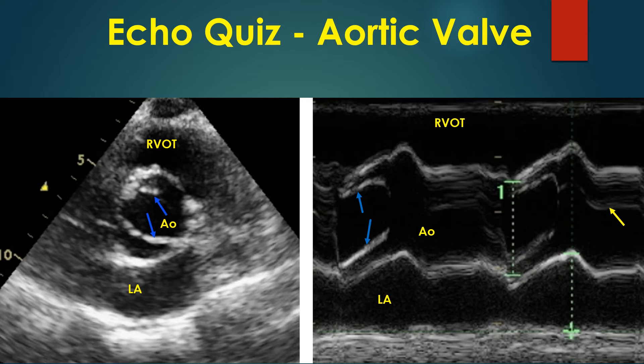Opening is incomplete, though there is a good orifice. The M-Mode image shows an M-Mode cut at the aorta-left atrium level. Right ventricular outflow tract is seen anteriorly and left atrium posteriorly. Aortic valve and aortic valve motions are seen between the two.